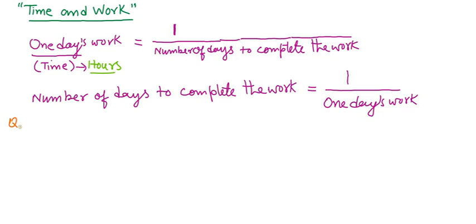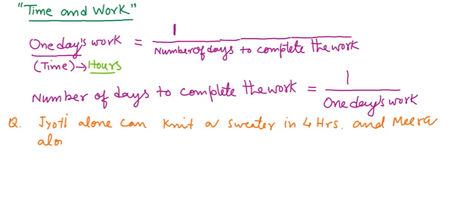One problem: Jyoti alone can knit a sweater in four hours, and Mira alone can knit a sweater in six hours.